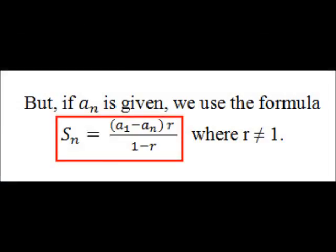But if a sub n is given, we use the other formula, which is S sub n equals a sub 1 minus a sub n times r, all over 1 minus r, where r is not equal to 1. Again, I am not saying this is 100% true — I based this on mere observation.